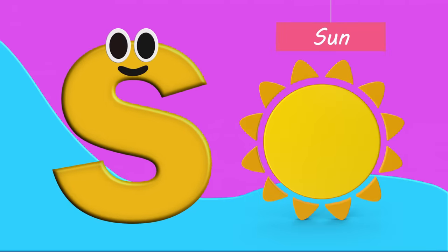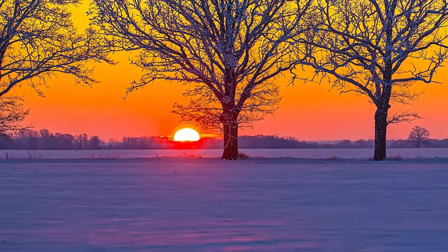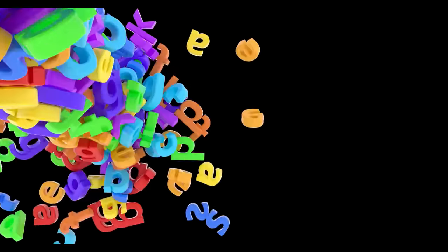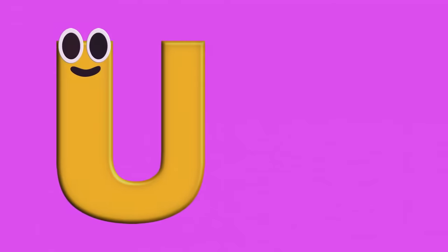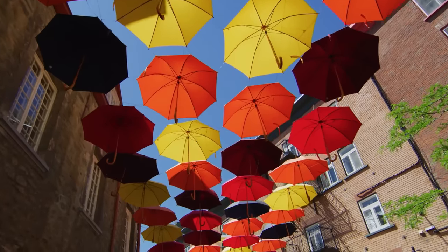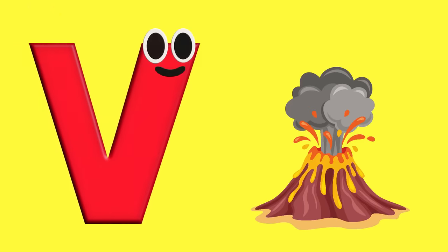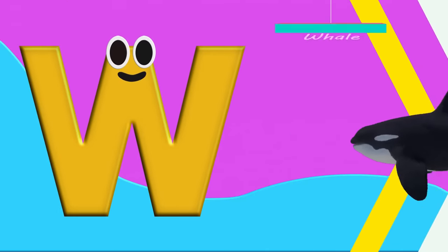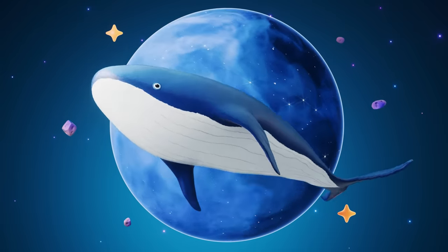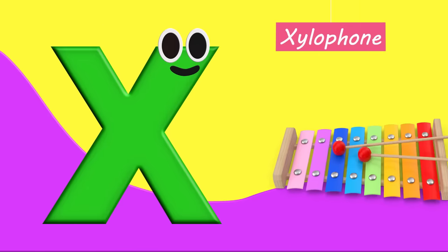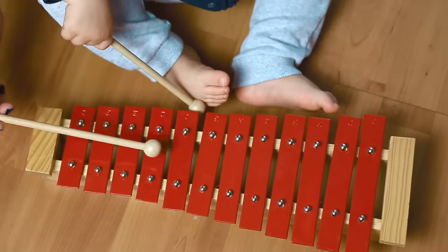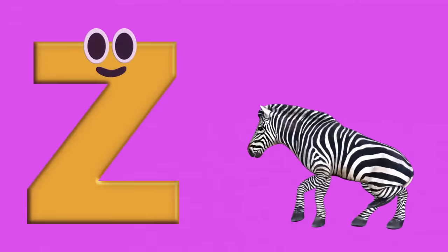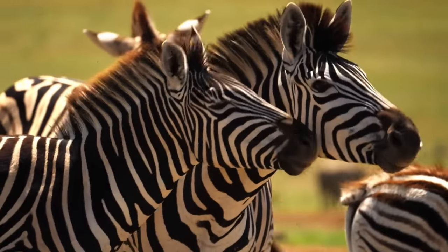S is for Sun. S-S-Sun. T is for Turtle. T-T-Turtle. U is for Umbrella. U-U-Umbrella. V is for Volcano. V-V-Volcano. W is for Whale. W-W-Whale. X is for Xylophone. X-X-Xylophone.